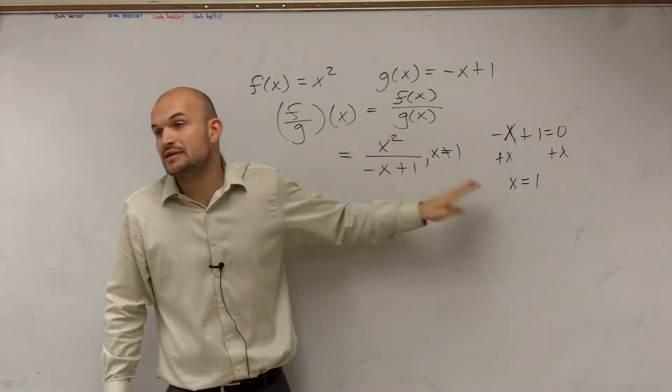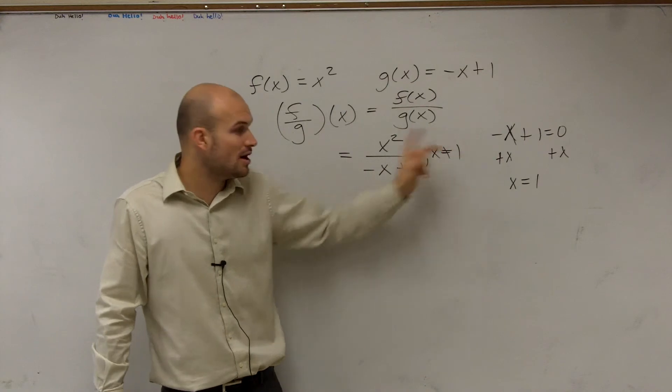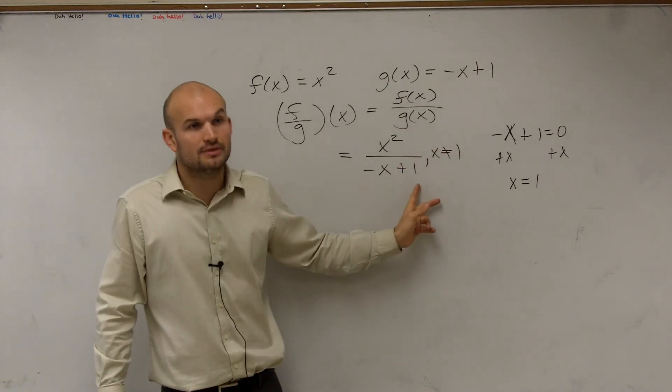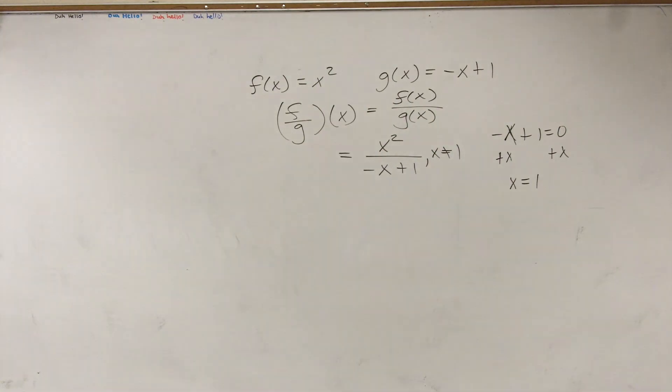You can't simplify any further, but we have to make sure now we write the constraint that x cannot equal 1. Because if x equaled 1, what would you get on the denominator? You get zero. Now let's just look at it the other way.